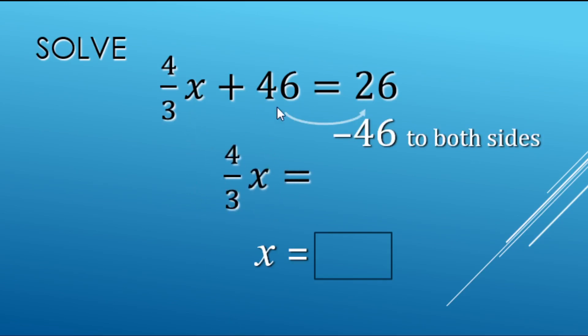So that's going to leave us with 4/3x plus 0, 46 minus 46, 0.